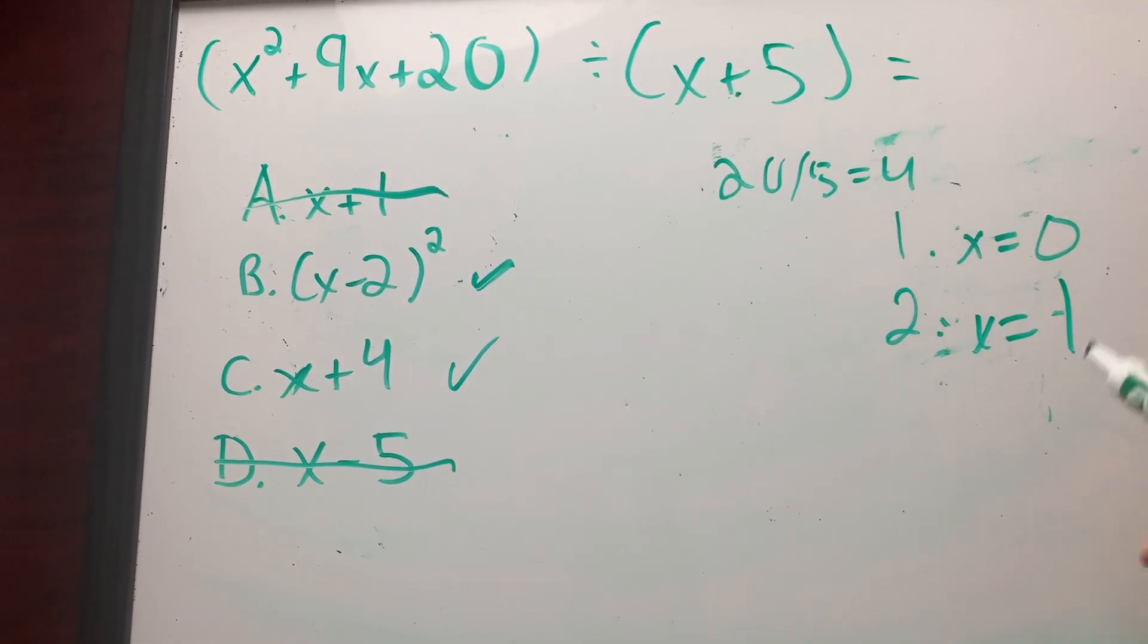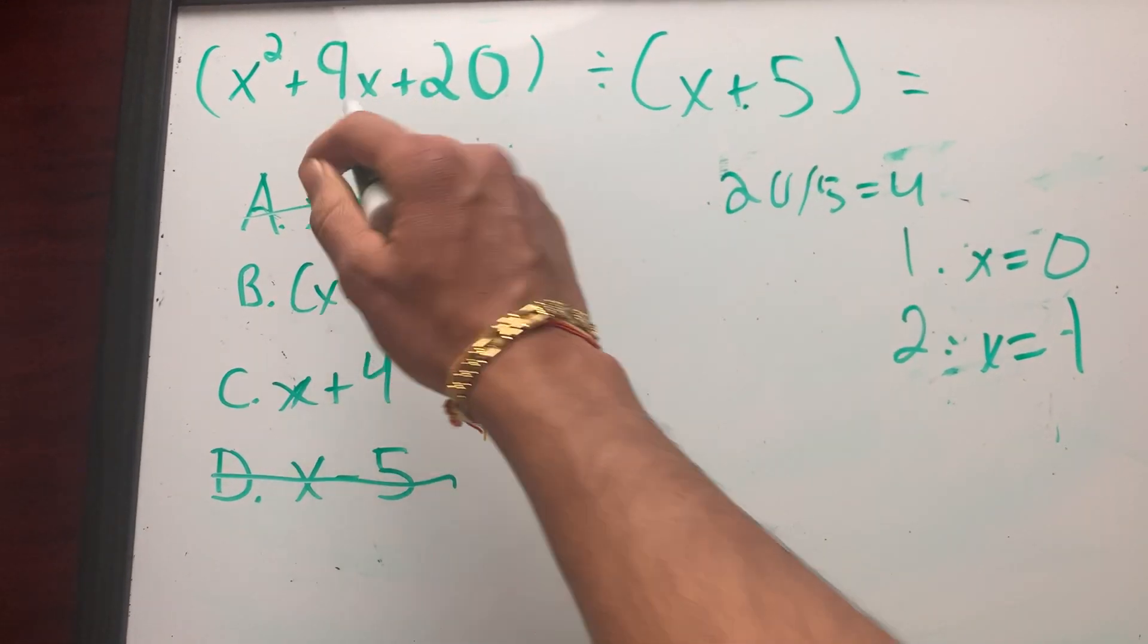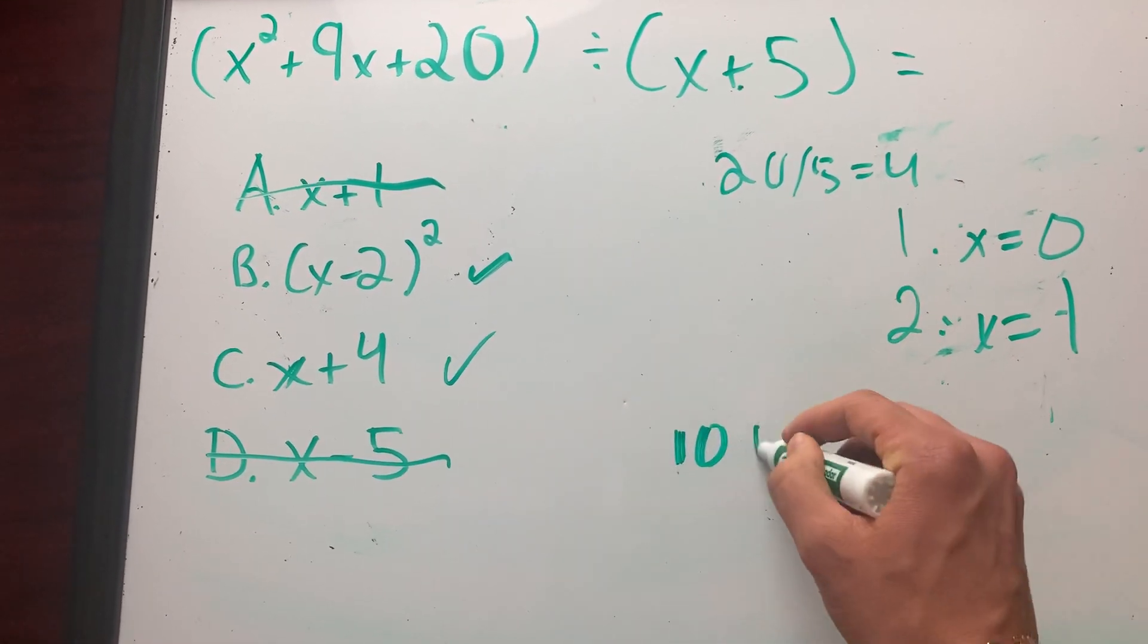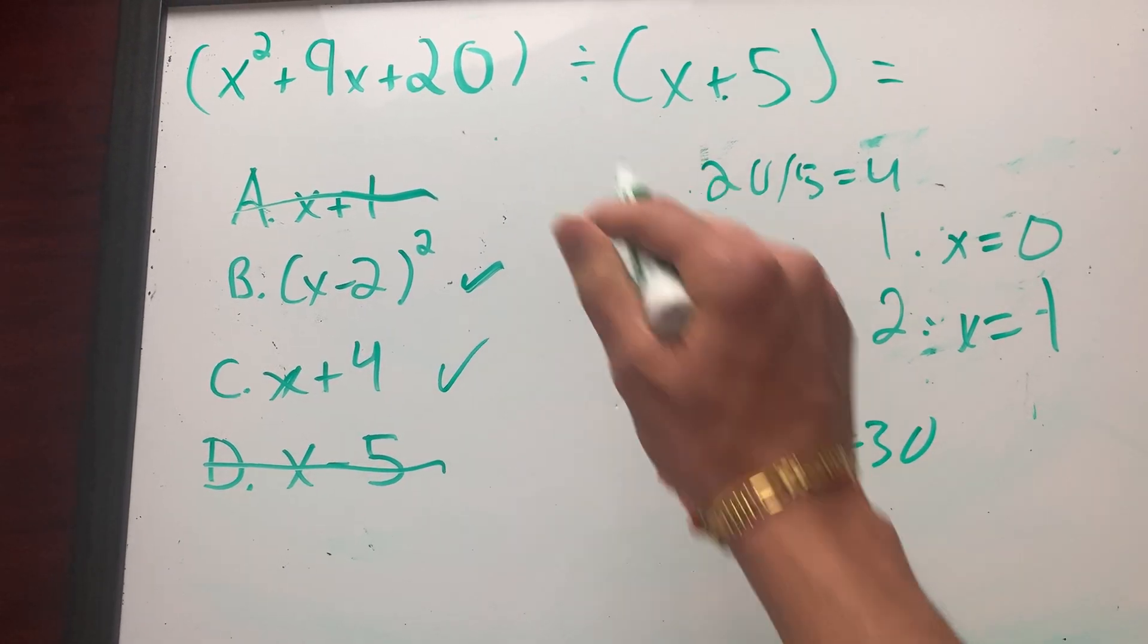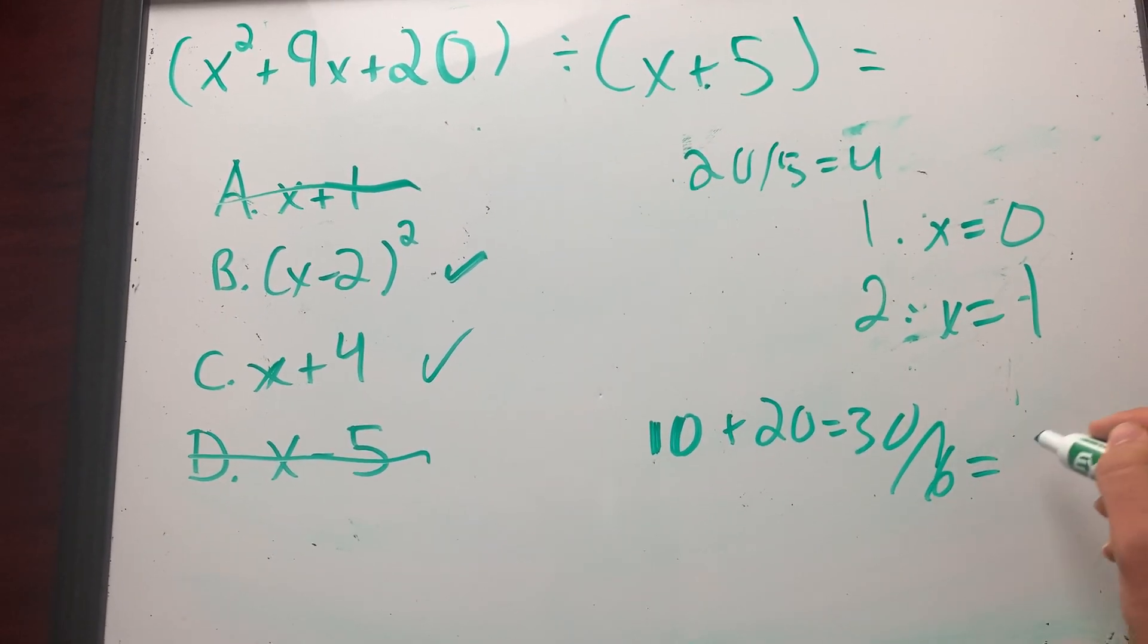Let's try x equals one. If I plug in x equals one, I get one plus nine, which is 10, plus 20, which is 30. Divided by one plus five, which is six. So it's equal to five.